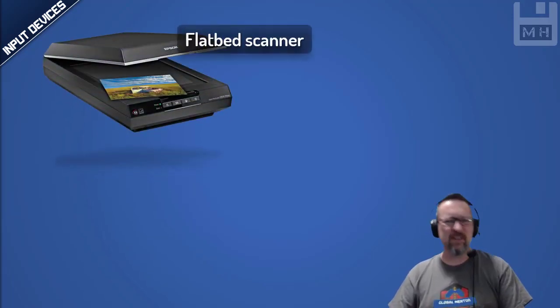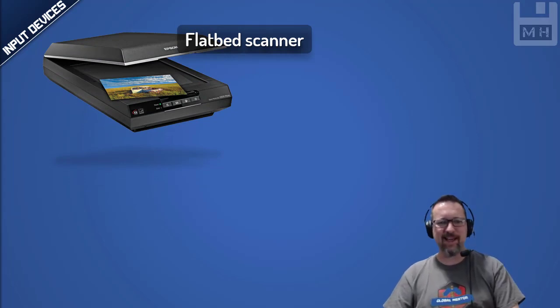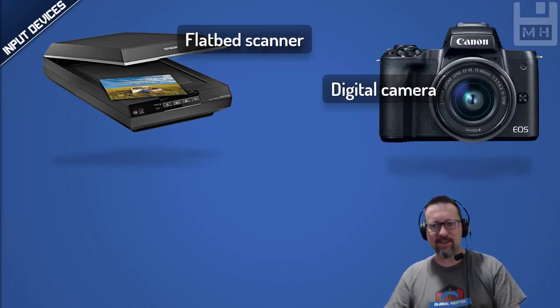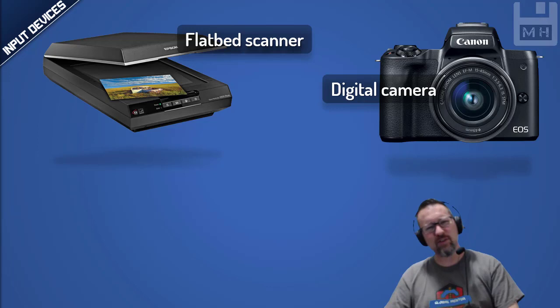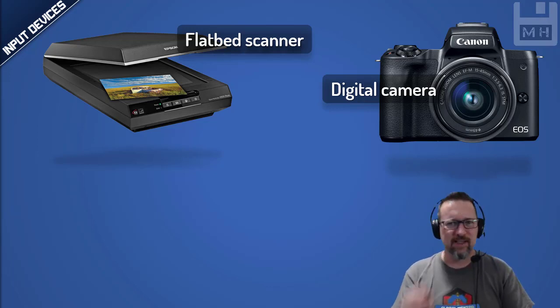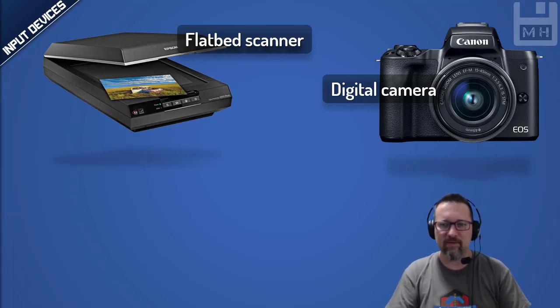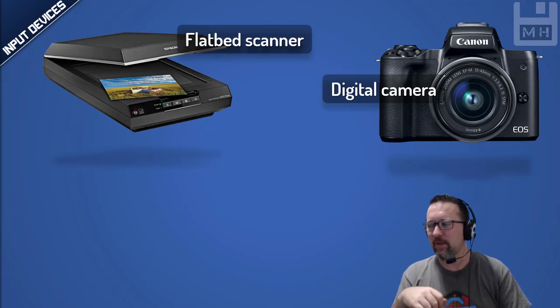Let's look at some input devices you may be familiar with. Here we have a flatbed scanner, which scans things. We also have a digital camera — a very popular device, although some would say digital cameras are being overtaken by cell phones because phone cameras are getting so good. There's still definitely a place for digital cameras for professional and high-quality photography.